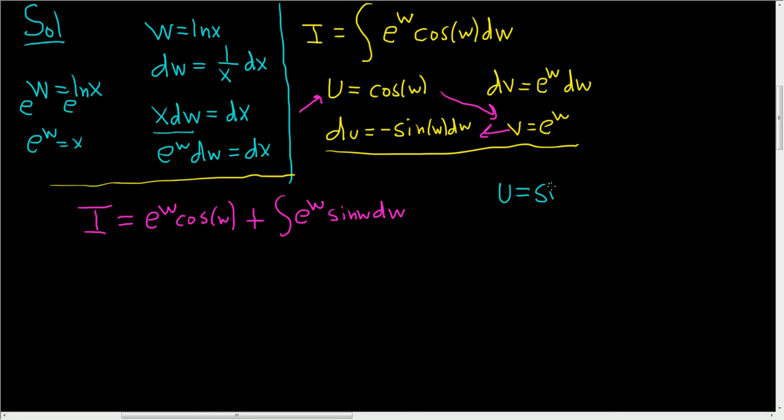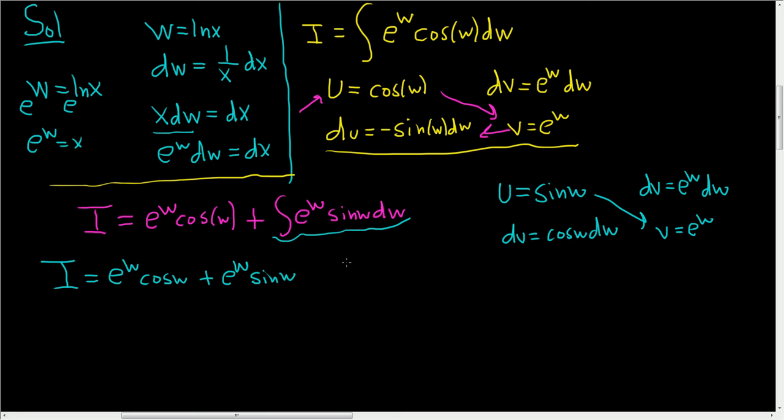So let's let u equal the sine of w. And then so dv is going to be e to the w dw. And then du is cosine w dw. And so v is equal to e to the w. So rewriting the whole thing, we have i equals e to the w cosine w plus, and now we'll use integration by parts. So uv, so e to the w sine w, e to the w sine w, and then minus vdu. So the integral of e to the w cosine w dw.